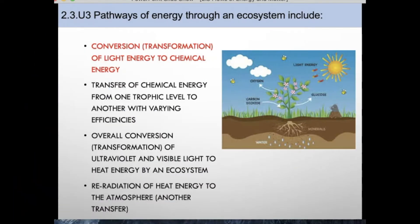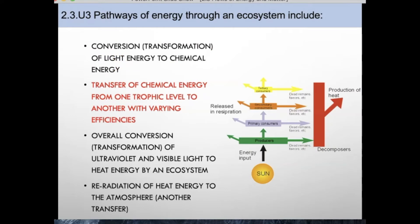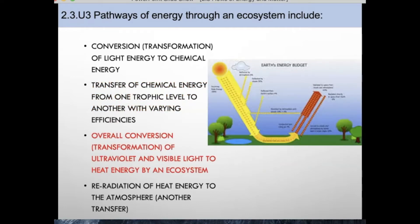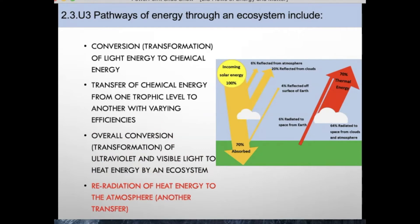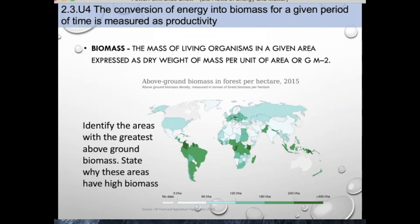The pathways of energy through an ecosystem include: conversion or transformation of light energy to chemical energy; the transfer of chemical energy from one trophic level to another with varying efficiencies; the overall conversion of ultraviolet and visible light to heat energy by an ecosystem; and the re-radiation of heat energy to the atmosphere. Biomass is the mass of living organisms in a given area, expressed as dry weight or mass per unit area per meters squared. Dry weight is the weight of an organism with all of the water removed.